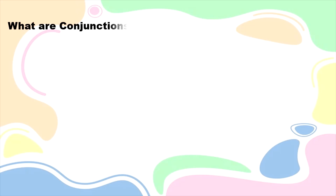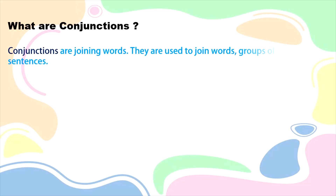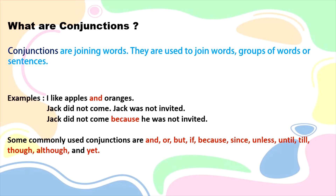Now we will look at conjunctions. So what are conjunctions? Conjunctions are joining words. They are used to join words, groups of words, or sentences. For example: I like apples and oranges. In this sentence, 'and' is your conjunction.